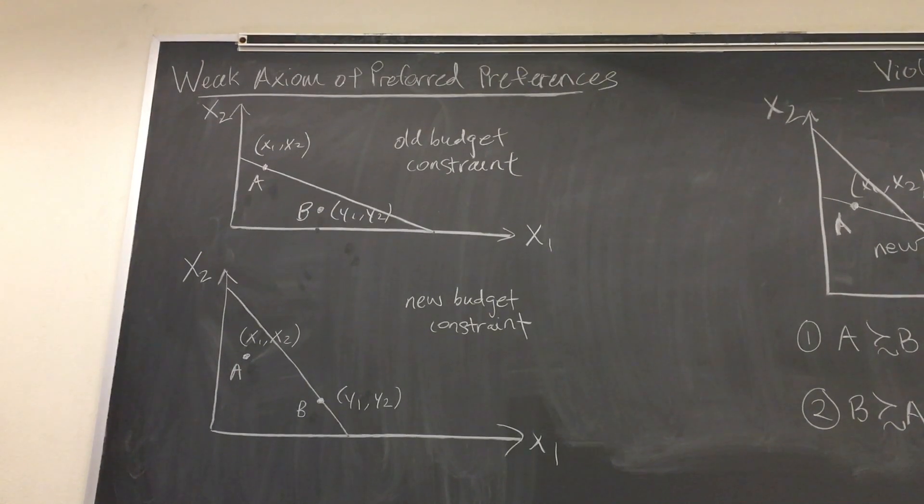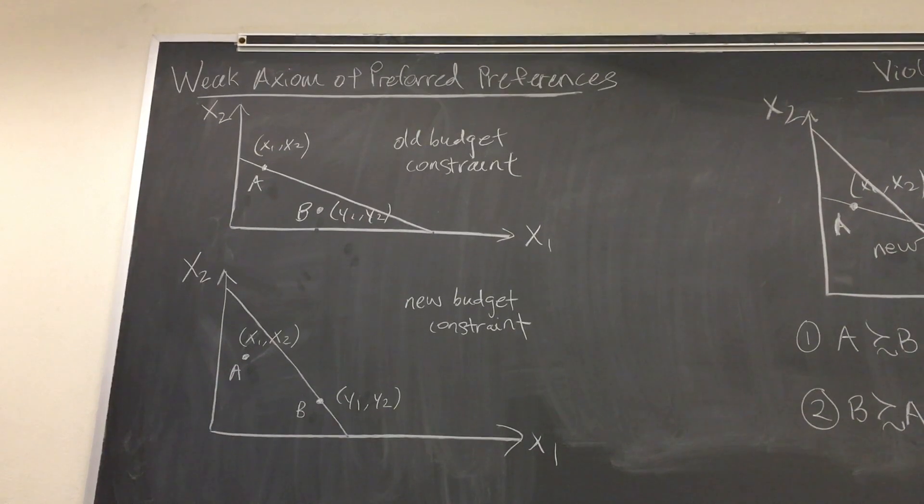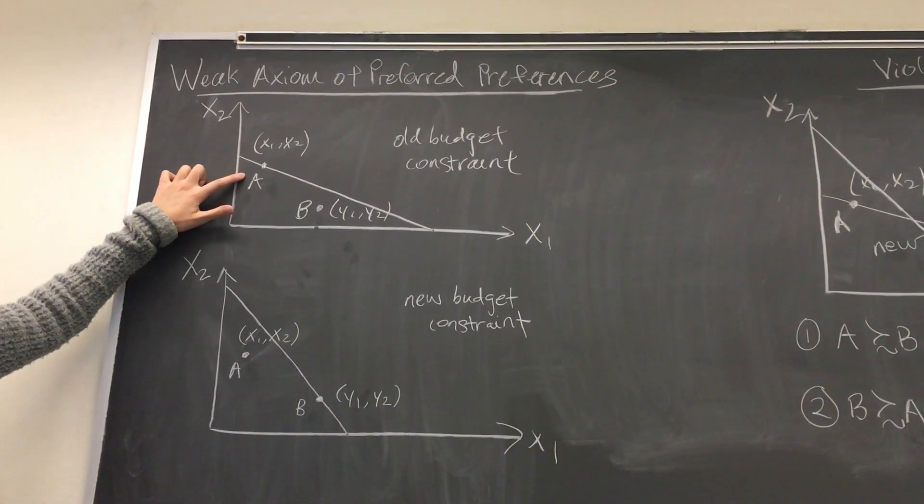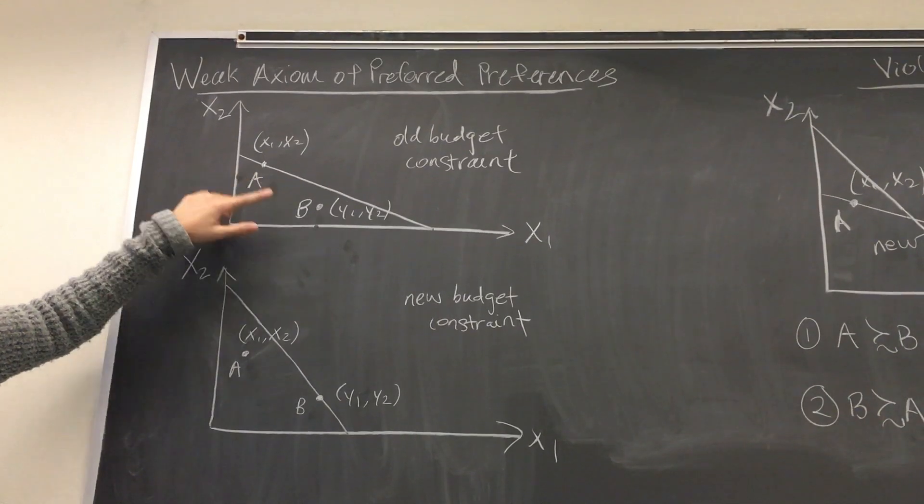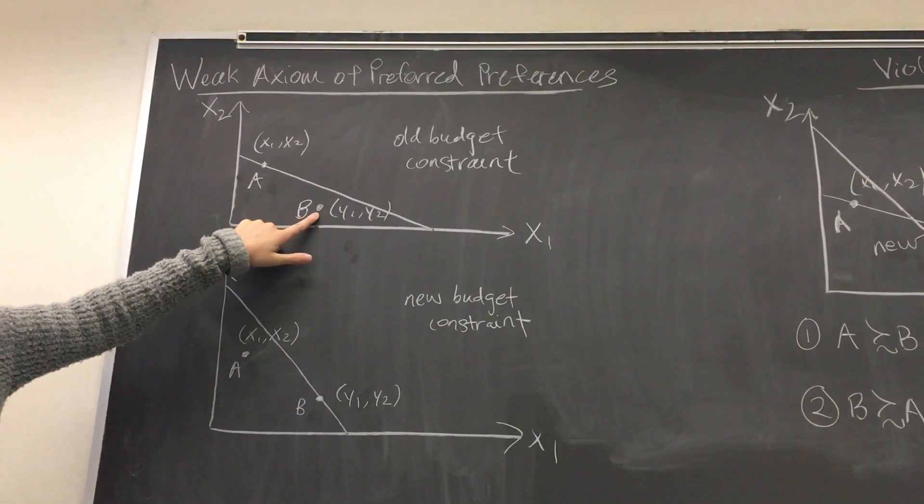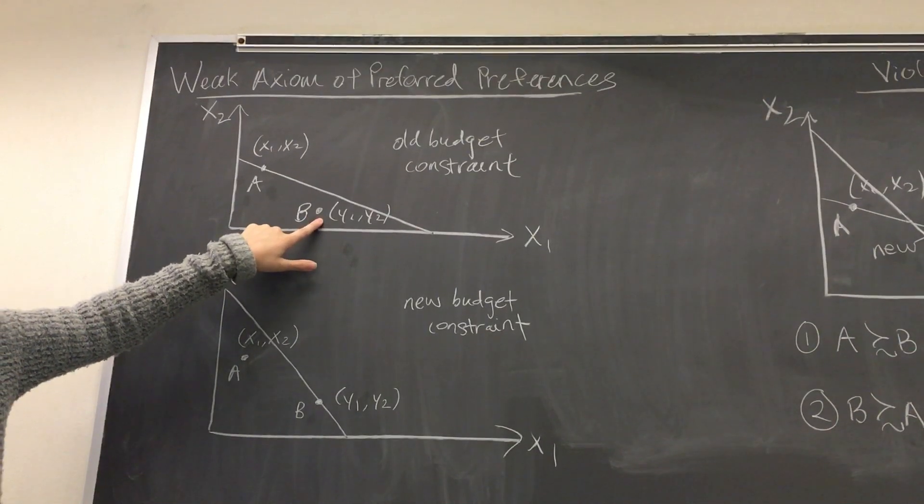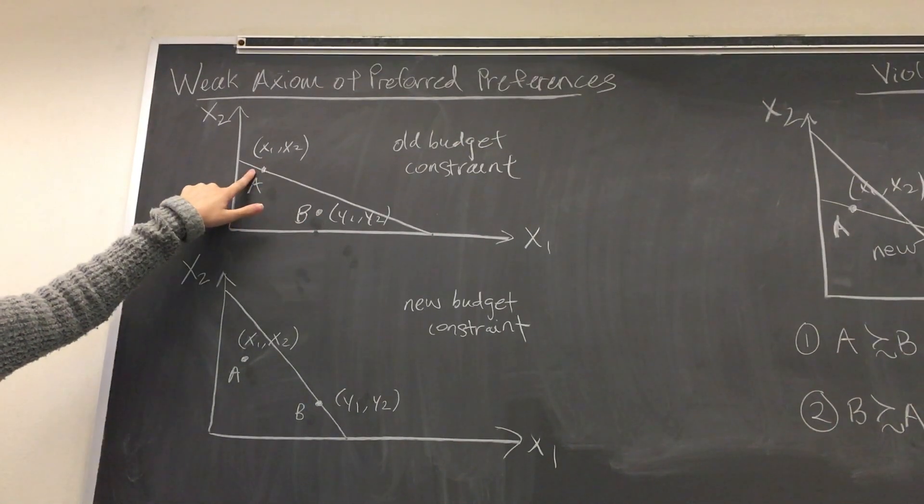This assumption is a key part of WARP, or the weak axiom of revealed preferences. This axiom states that if X1, X2 is directly revealed preferred to Y1, Y2, and the two bundles are not the same, then it cannot happen that Y1, Y2 is directly revealed preferred to X1, X2.